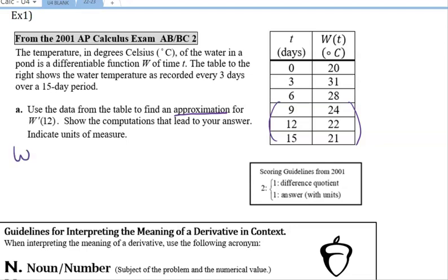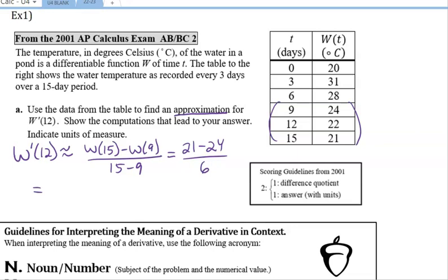So I'm going to go from 9 to 15 and just keep 12 in the middle of that interval. So I'm going to write W prime of 12 is approximately equal to, and then I'm going to do the average rate of change from 9 to 15. So I can write W of 15 minus W of 9 over 15 minus 9. And then I can plug in the values there, so it's going to be 21 minus 24 over 15 minus 9 is 6. So that's negative 3 over 6, which is negative 1 half.